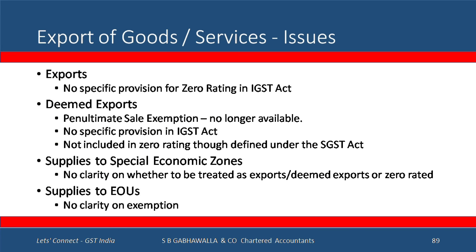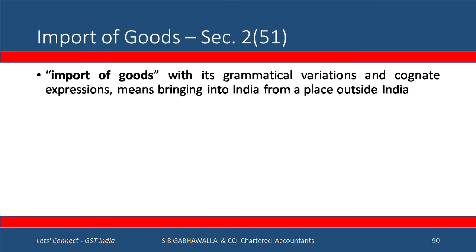To summarize exports: exports have zero rating, but that zero-rating provision is currently under the SGST Act instead of the IGST Act — a technical error that will be corrected. The penultimate sale exemption — second-level exemption — is no longer available. Supplies to SEZs raise a promissory estoppel issue, as SEZ units were set up assuming they could procure goods and services without taxes, but zero rating may no longer continue. For EOUs it is very clear that the exemption is not going to continue. There will be significant cash flow issues vis-à-vis SEZs and EOUs.